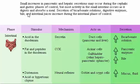Small increases in pancreatic and hepatic secretions may occur during the cephalic and gastric phases of control, but most activity in the small intestine occurs as it digests and absorbs a meal. Secretion of bicarbonate solutions, digestive enzymes, bile, and intestinal juices increase during the intestinal phase of control.